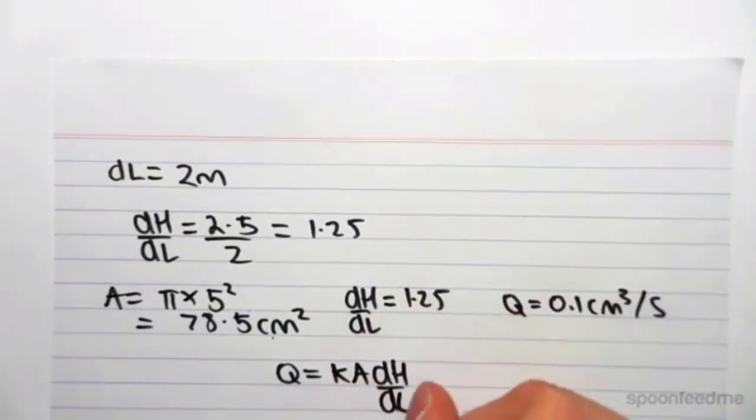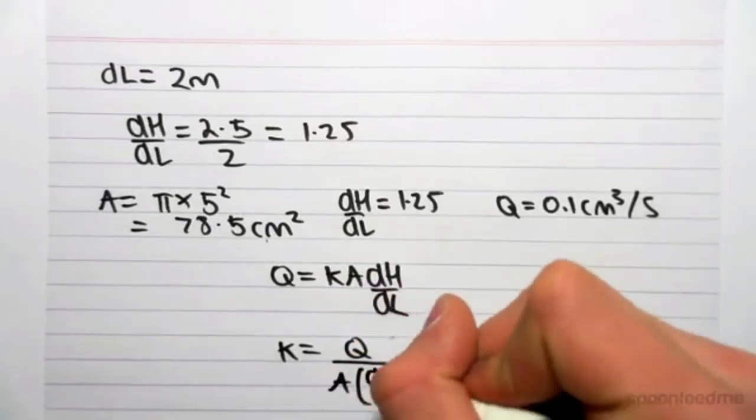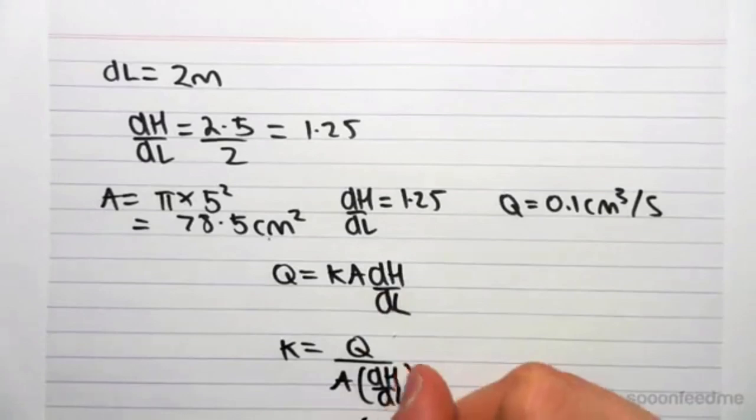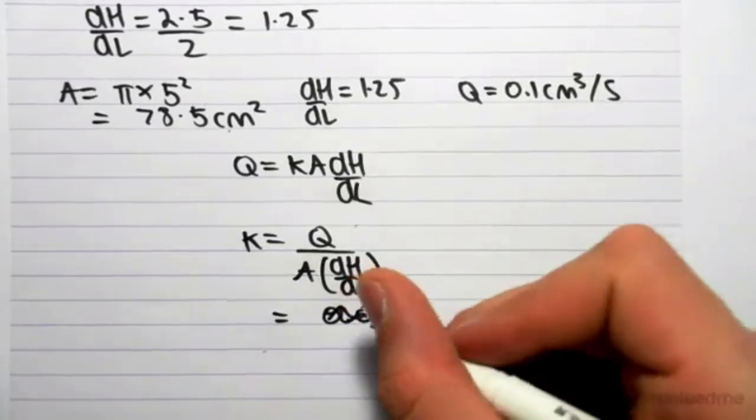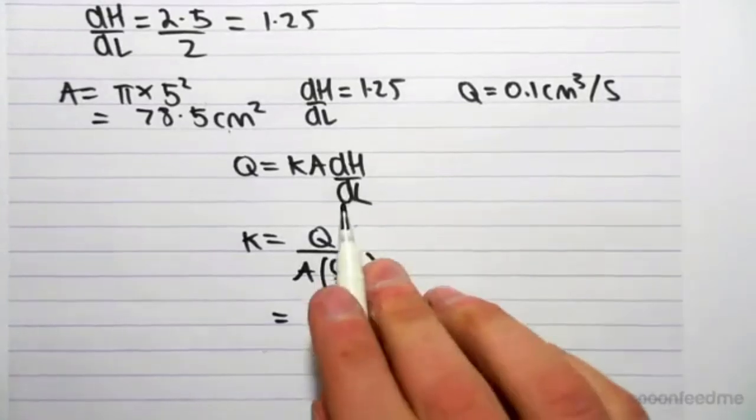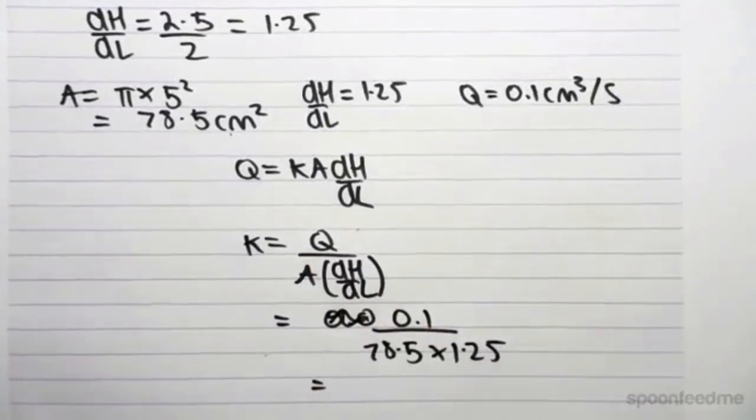So we know Q equals K, A, dH on dL, which means K equals Q on A times dH on dL. So if we sum everything in, Q is 0.1 on top of A, which is 78.5, times dH on dL, which is 1.25.